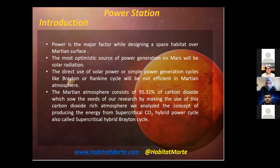Power is the major factor when designing a space habitat on the Martian surface. The most optimistic source of power generation on Mars will be solar radiation, since solar radiance over the Martian surface is greater than on Earth. However, direct use of solar power or simple power generation cycles like Brayton or Rankine cycles will not be efficient in the Martian atmosphere, so we have to use some other kind of cycle or power generation mode.